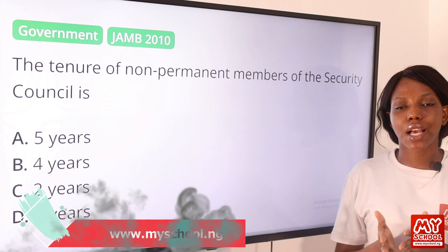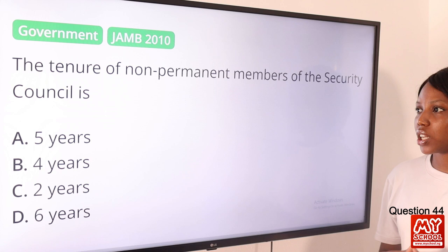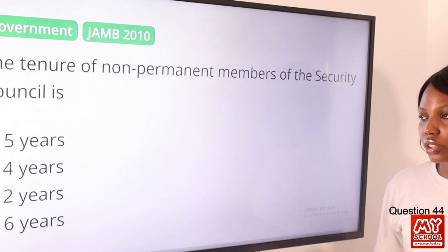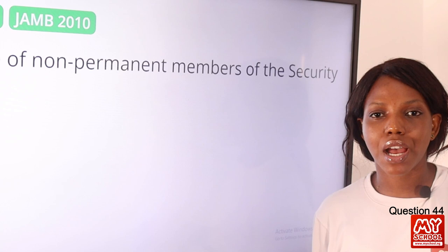Question 44. The tenure of non-permanent members of the Security Council is? The answer is option C, two years. The Security Council is made up of 15 members: 5 permanent members and 10 non-permanent members. The 10 non-permanent members are elected for a two-year tenure.